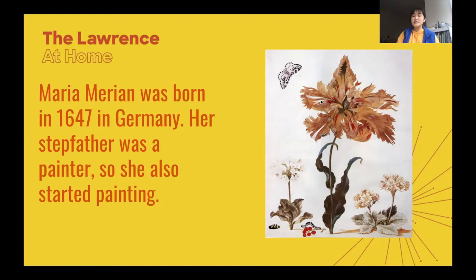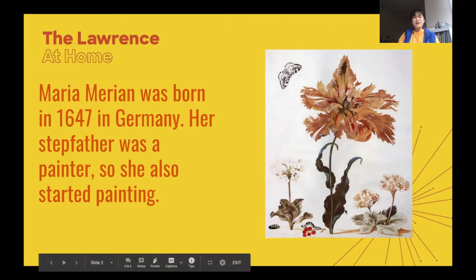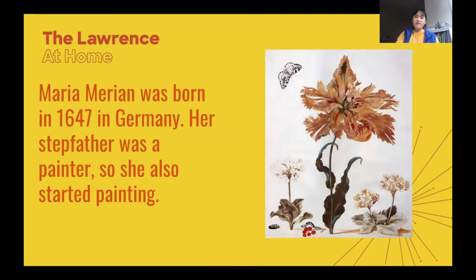Is there anything that you noticed about this painting that might show what she liked to paint? I see an insect here with wings, I see a flower, some more flowers here with leaves, and I also see another insect here but without wings. I think maybe she might have liked to draw plants and insects, but let's find out.